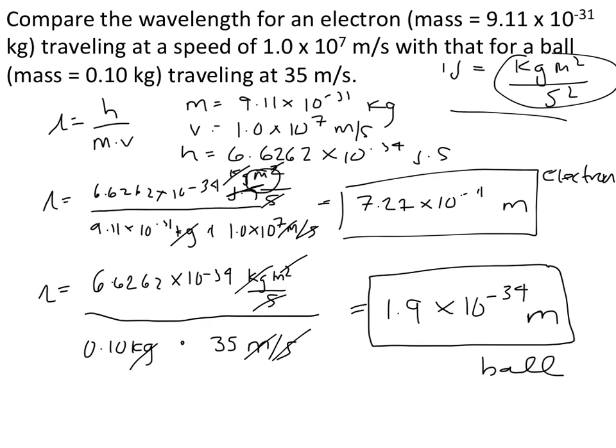If you look at these two values we calculated, notice the wavelength of the electron is much larger than the wavelength of the ball. There's an observable range that we have. But as we get into larger objects, the wavelengths get so small that they're difficult to observe with the instrumentation and equipment we have now.